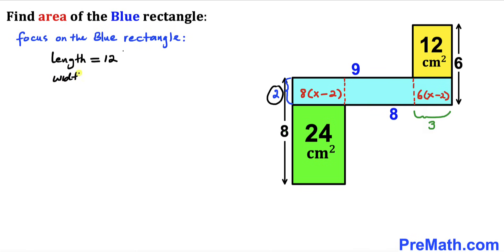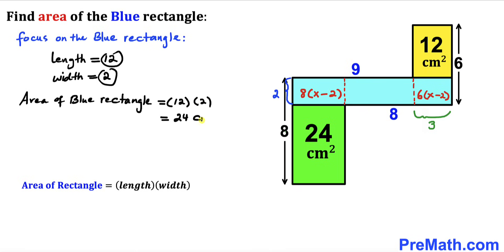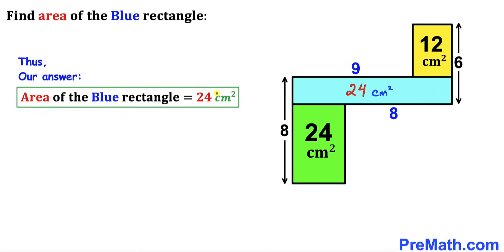Our total length of the blue rectangle is 9 + 3 = 12 cm, and the width is 2 cm. Using the area of a rectangle formula once more, the area of the blue shaded rectangle is 12 × 2 = 24 cm². So after all these calculations, the area of the blue shaded rectangle turns out to be 24 cm². That's our final answer. Thanks for watching and please don't forget to subscribe to my channel for more exciting videos.